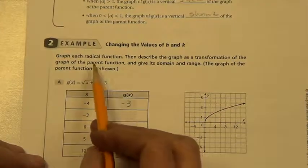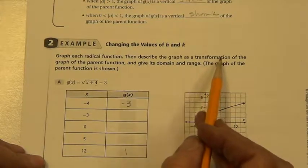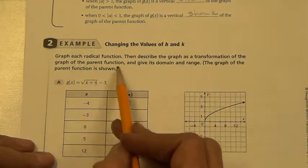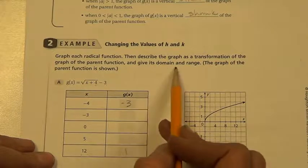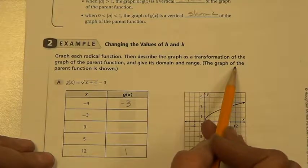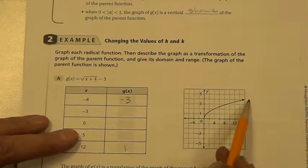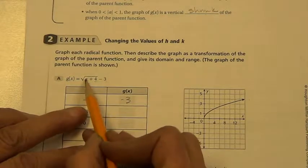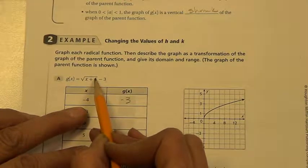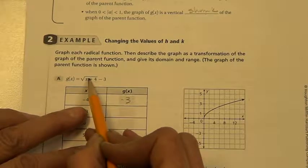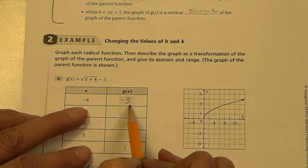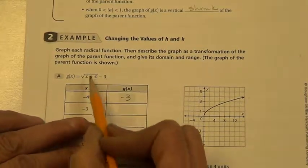Graph each radical function, then describe the graph as a transformation of the graph of the parent function. Give its domain and range. So here's the parent function. We would plug negative 4 in here. Negative 4 plus 4 is 0. Square root of 0 is 0. Minus 3 would be minus 3. Negative 3 plus 4, that would be positive 1. Square root of 1 is 1. Minus 3 is negative 2.